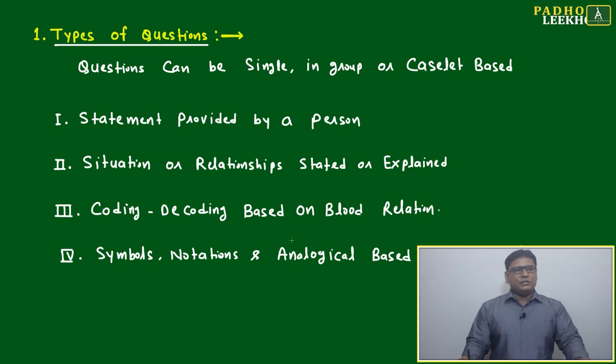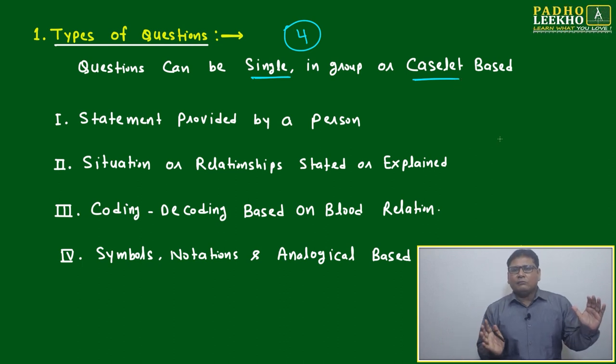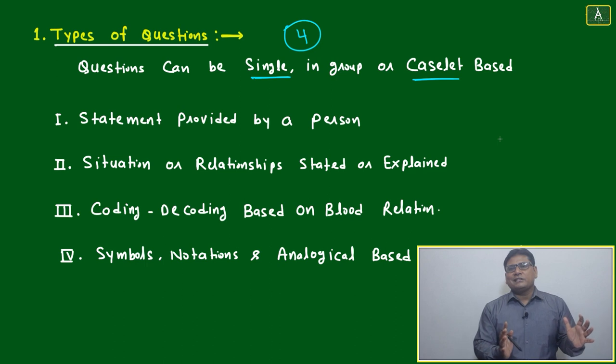First, we'll come to the types of questions. These four types of questions you can expect in blood relation beyond that will not appear. Questions can be single or in case-lead format. It can be like a bunch of information is given about one family, party, gathering, or meeting, and based on that, four or five questions will be generated.